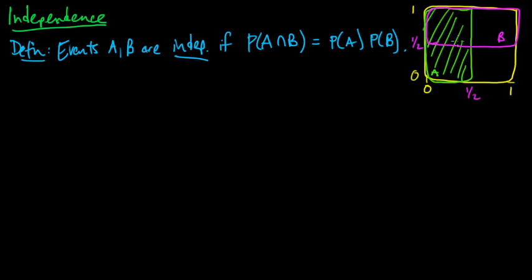It's not particularly important that I drew them as the left half and the top half — they could be all funny shaped, skewed, bent around. What's important is the overlap: the probability of the intersection and the probabilities of the individual events. That's independence of two events.